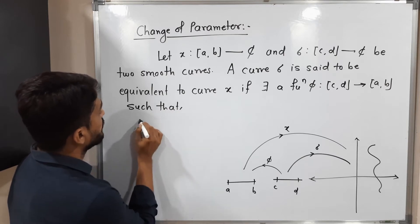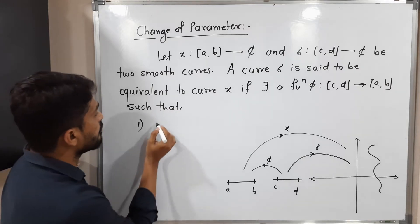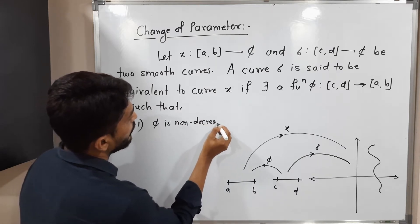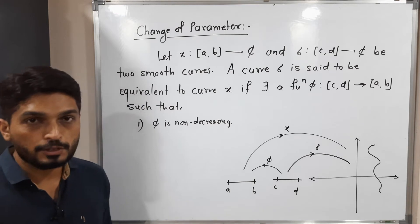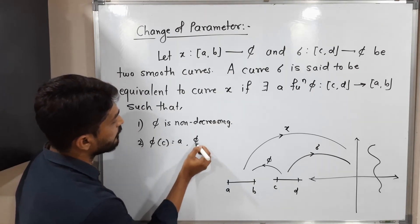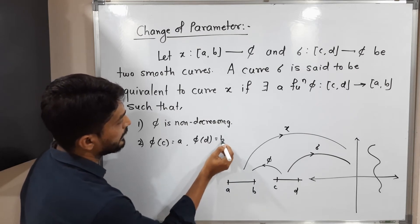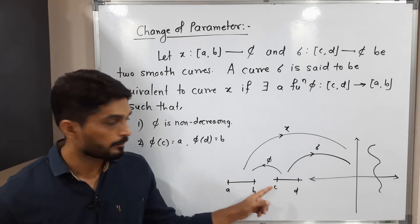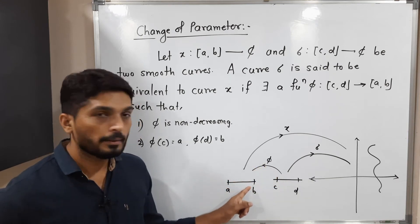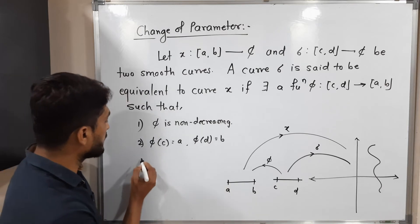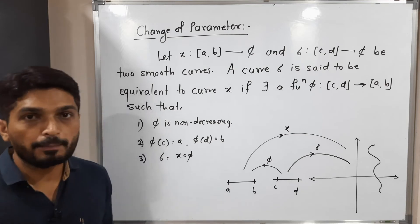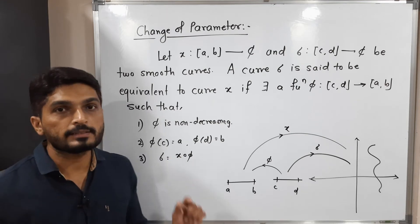The first condition is that φ is non-decreasing. The second condition is that φ(c) = a and φ(d) = b, meaning φ maps point c to point a and point d to point b. The third and very important condition is that σ = χ∘φ (σ equals χ composite φ).